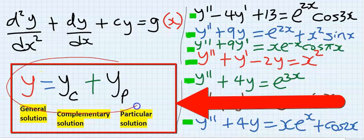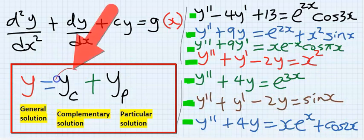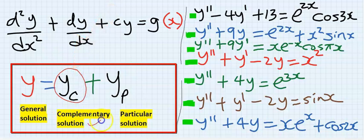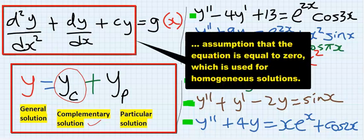This is the general solution of a non-homogeneous equation, where yc is the complementary solution. The complementary solution is usually obtained with an assumption that the equation is homogeneous.